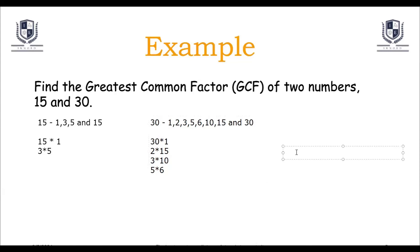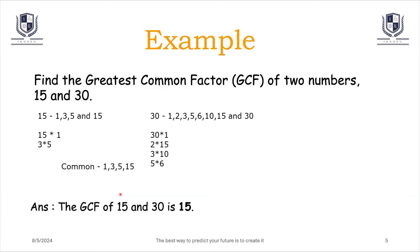So the GCF of 15 and 30 is 15. That's the answer. GCF stands for Greatest Common Factor, and for these two numbers, the greatest common factor is 15.